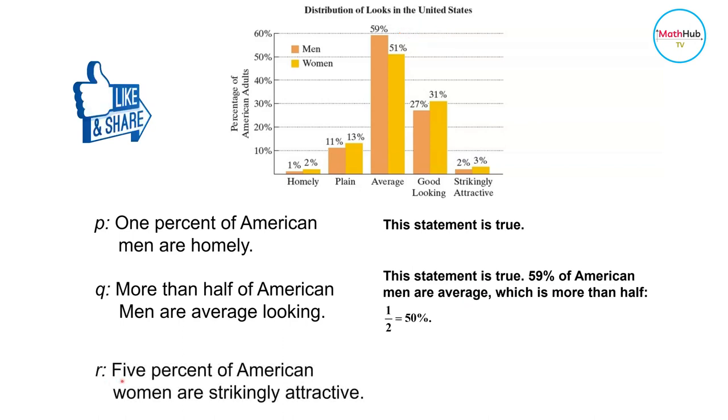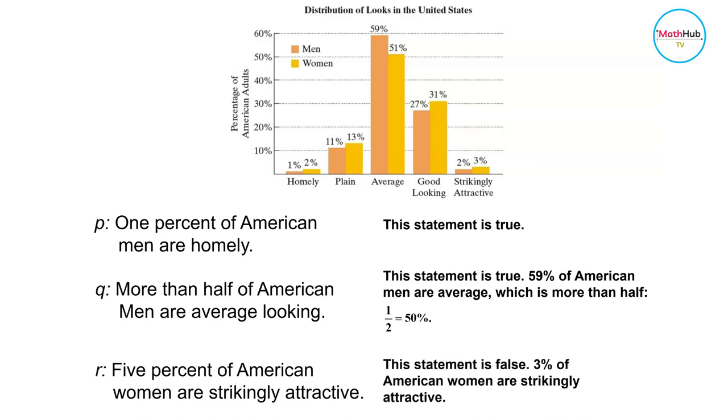R is used to represent the statement 5% of American women are strikingly attractive. This statement is false because only 3% of American women are strikingly attractive.